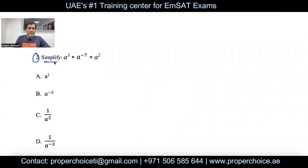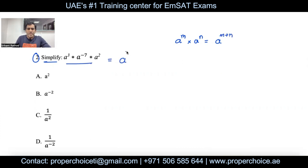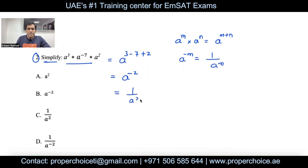Question 2: Simplify a³ × a⁻⁷ × a². Applying the rule that when bases are the same, we add the powers: a to the power (3 − 7 + 2) = a to the power (−2). Then using the rule a to the power (−m) = 1/a^m, we get 1/a². The answer is option C.